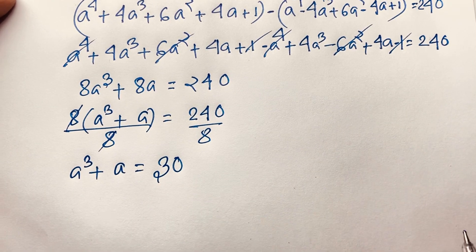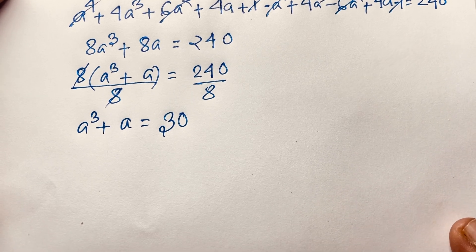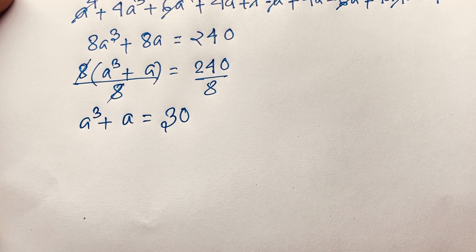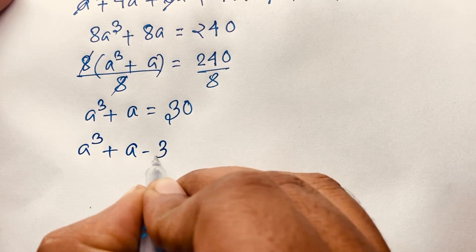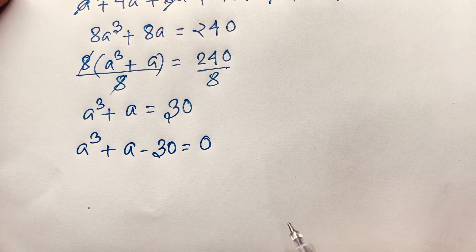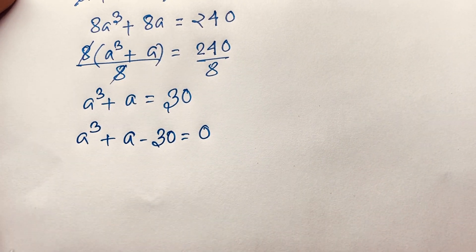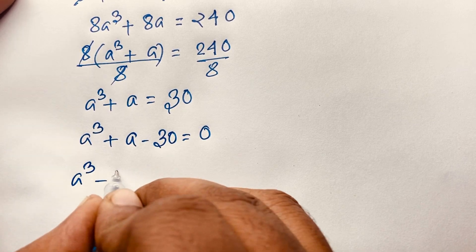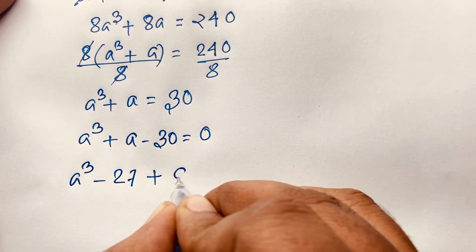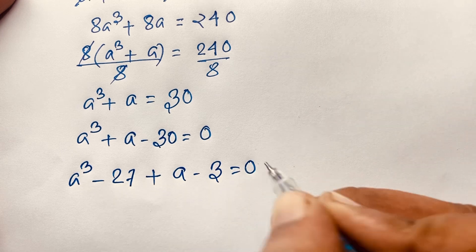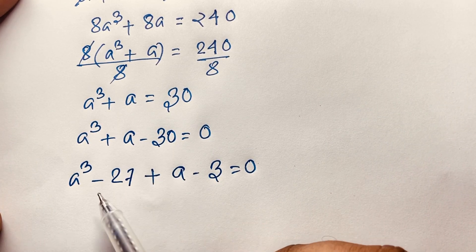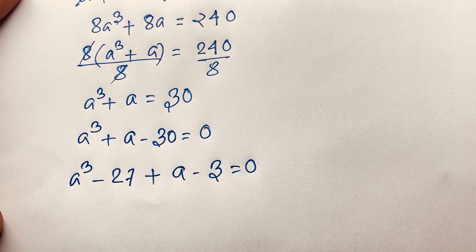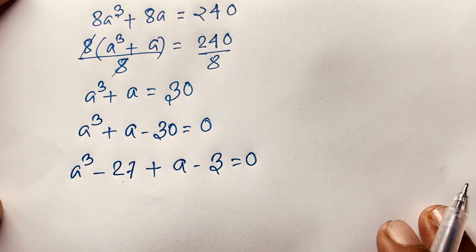We find the cubic equation a^3 + a = 30, which rearranges to a^3 + a - 30 = 0. I rewrite -30 as -27 - 3, since 27 + 3 = 30, giving a^3 - 27 + a - 3 = 0.